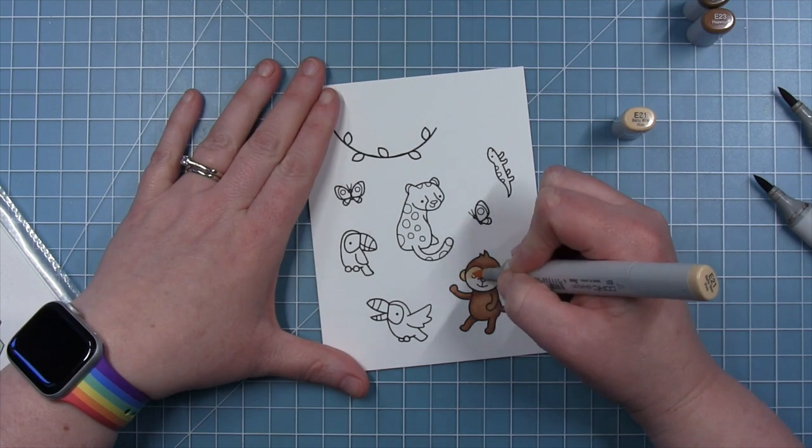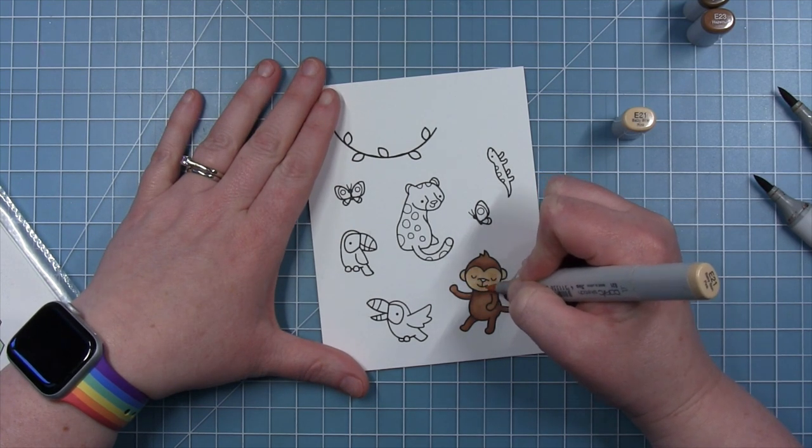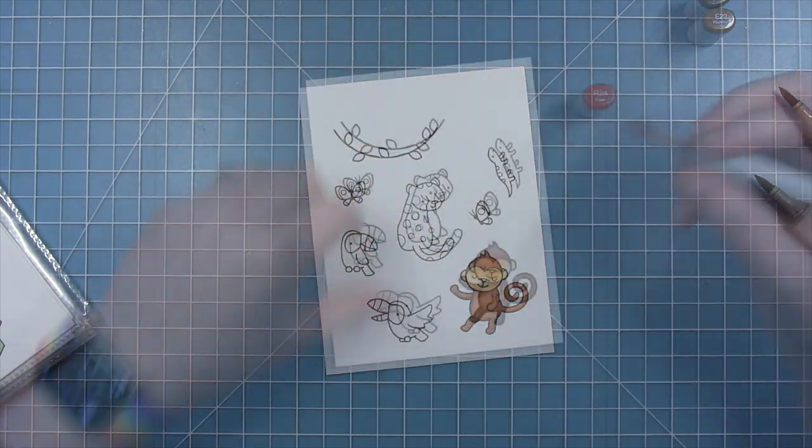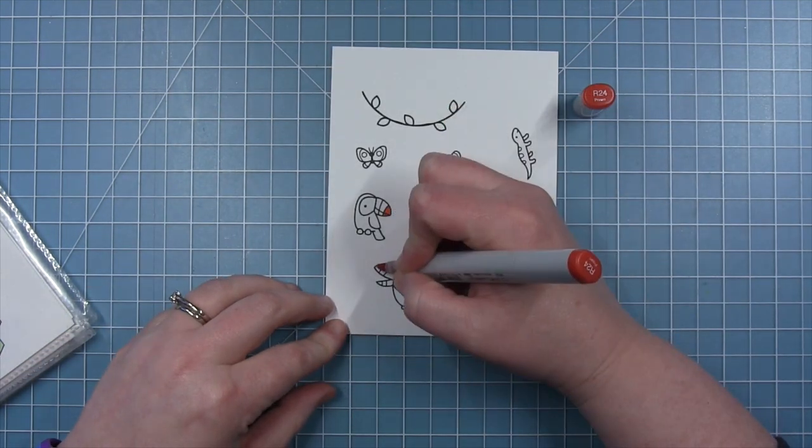For the face, I'm using E21 and just adding two layers up where I want a little bit of a shadow. I use the same color for the ears as well.